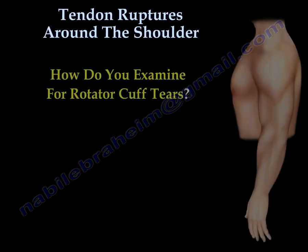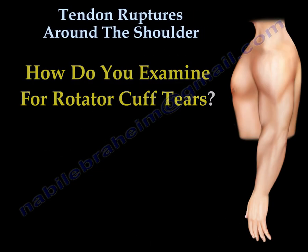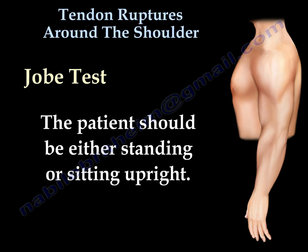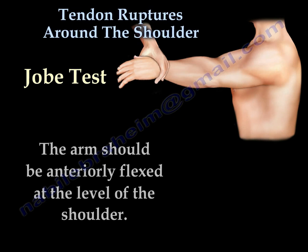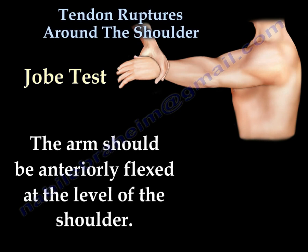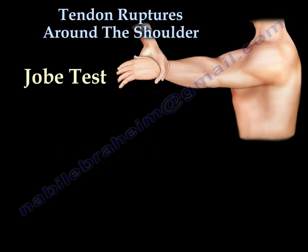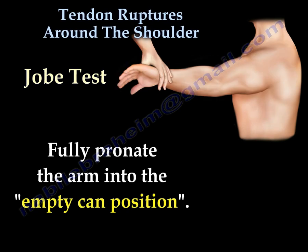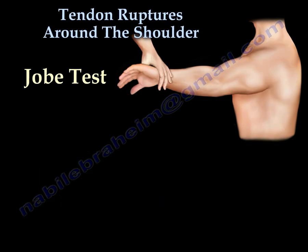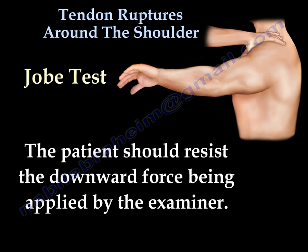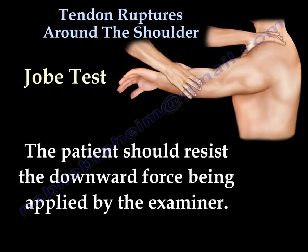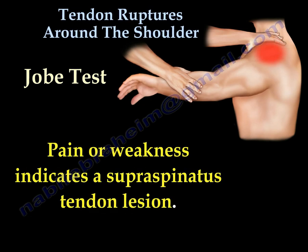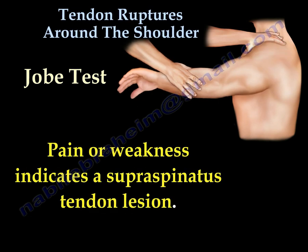How do you examine for rotator cuff tears? The Jobe test is one way to test for rotator cuff tears. The patient should either be standing or sitting upright. The arm should be anteriorly flexed at the level of the shoulder, then fully pronated into the empty can position. The patient should resist the downward force being applied by the examiner. Pain or weakness indicates a supraspinatus tendon lesion.